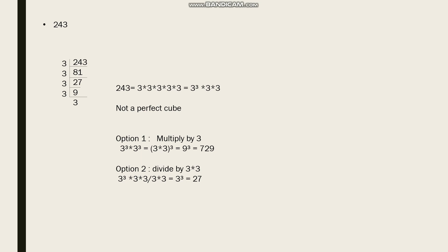What are we going to do for making it a perfect cube? Option 1: multiply by 3. Option 2: divide by 3 × 3. For option 1: 3³ × 3 × 3 × 3 gives 3³ × 3³ = (3 × 3)³ = 9³, meaning 729 is a perfect cube. For option 2: divide by 3 × 3, so 3 × 3 cancels, remaining is 3³, which gives 27, a perfect cube.